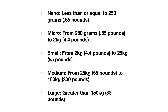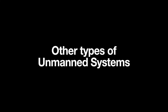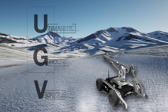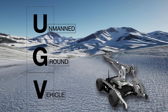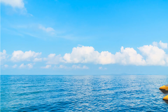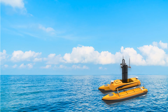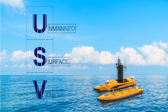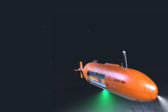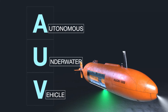We can also categorize drones based on size: Nano, Micro, Small, Medium, and Large. There are also other types of unmanned systems, such as the unmanned ground vehicle, the unmanned surface vehicle, and the autonomous underwater vehicle.